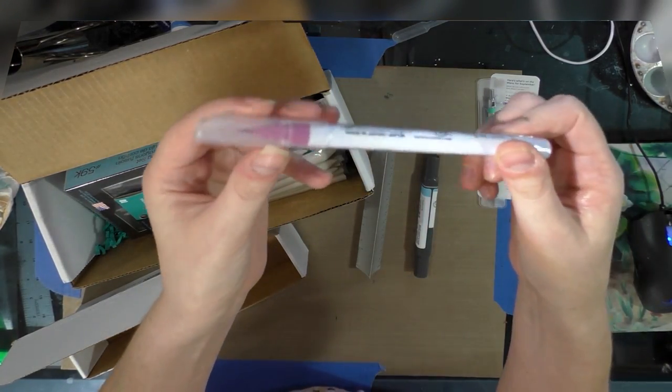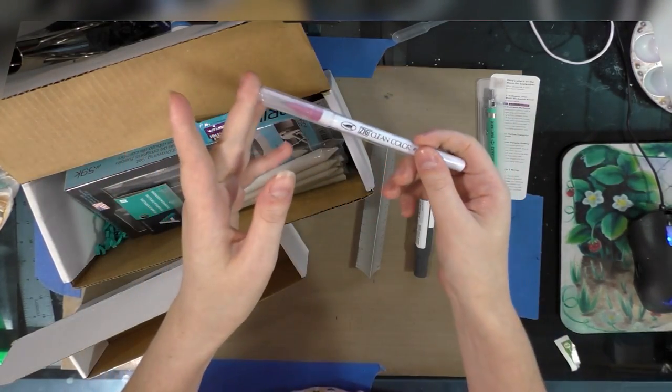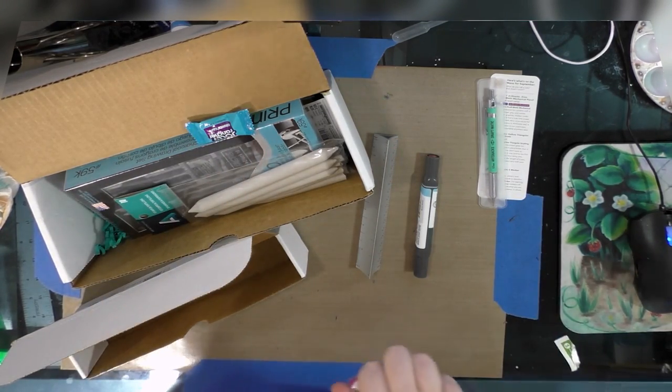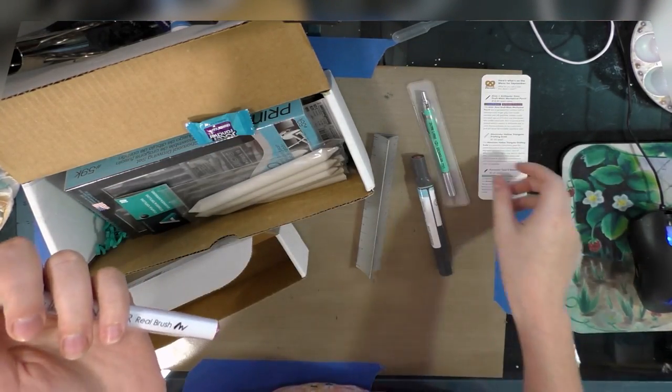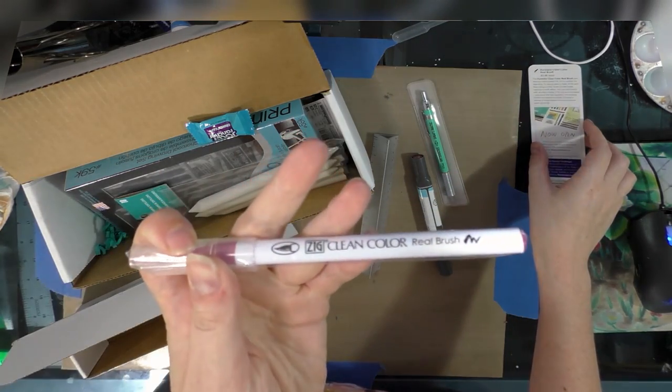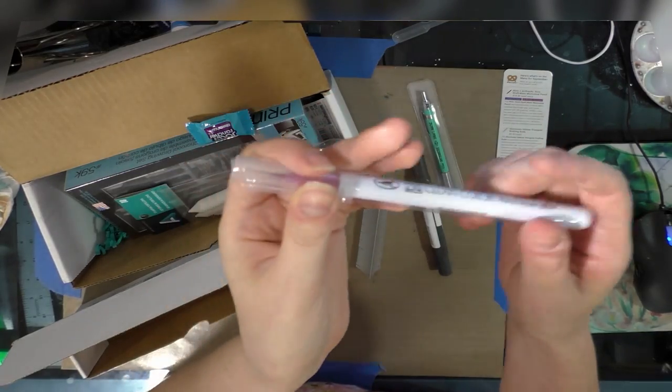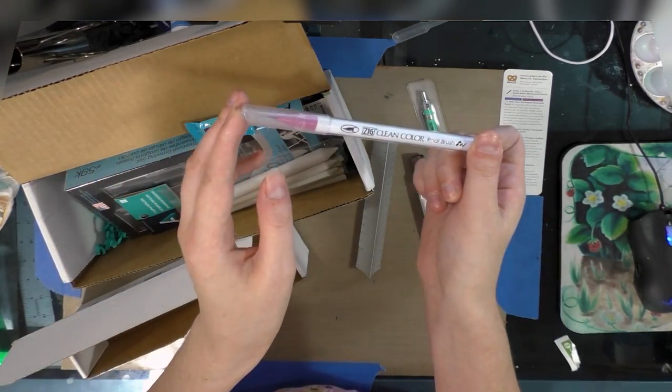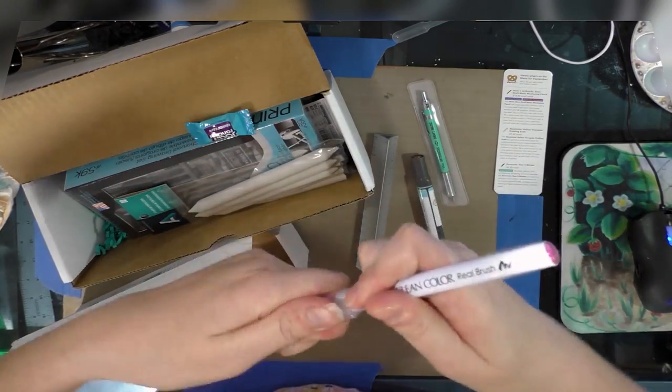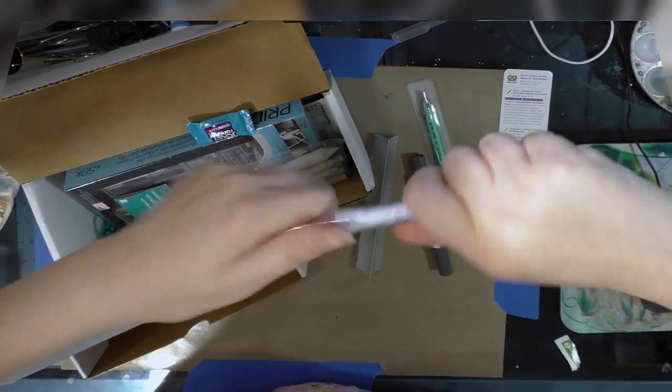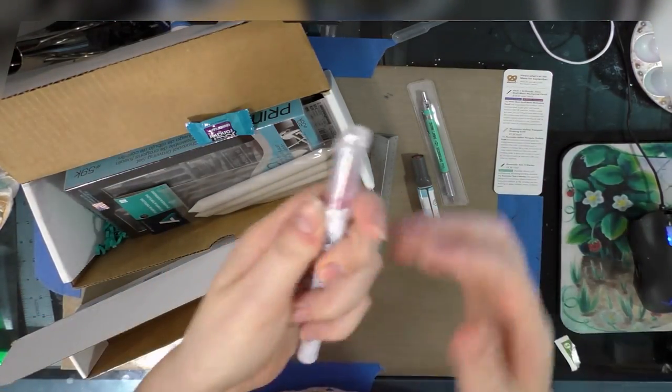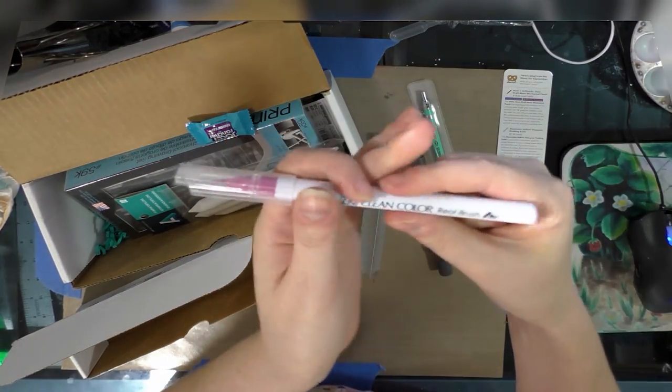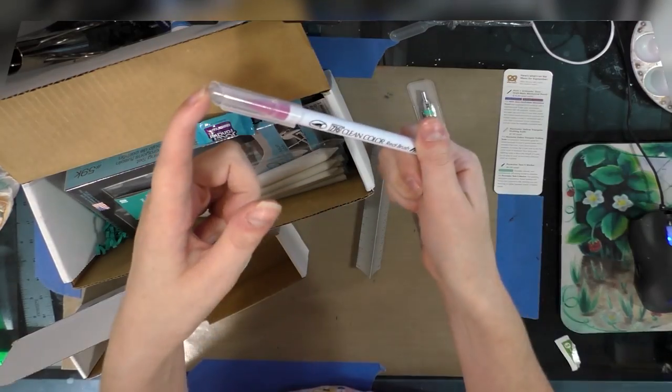Next up is the Zig Clean Color Real Brush, still in its wrapper. Those of you who watch the channel have seen me talk about these before. They say it's $3.48 retail, but they are $6 and up open stock through Amazon, $2.47 on markersupply.com, or $3.09 through Dick Blick. Let's go ahead and remove this plastic wrapper.